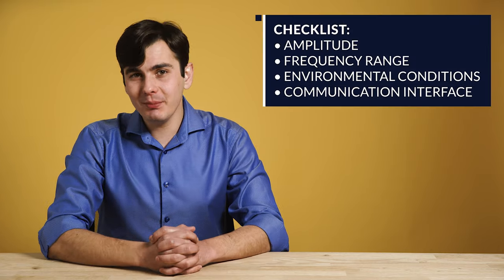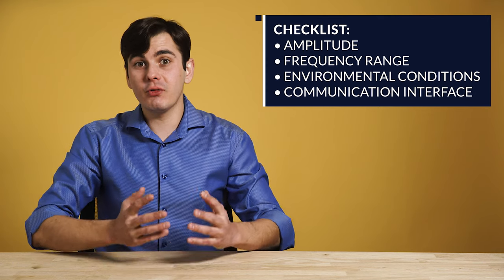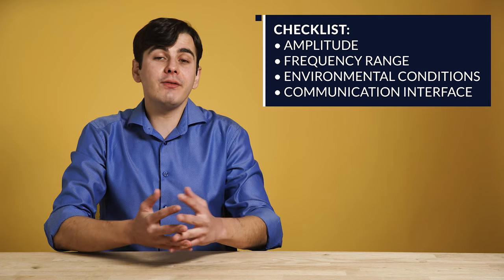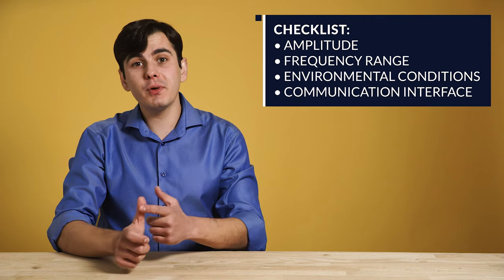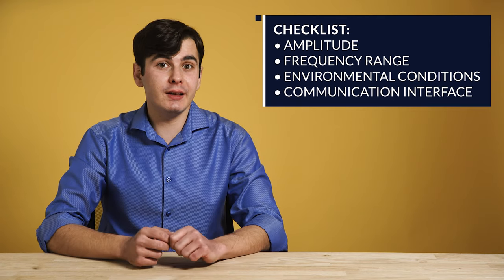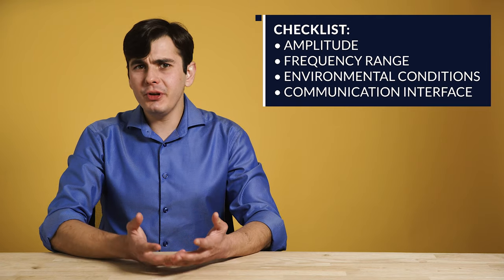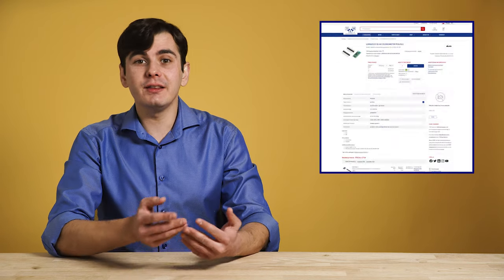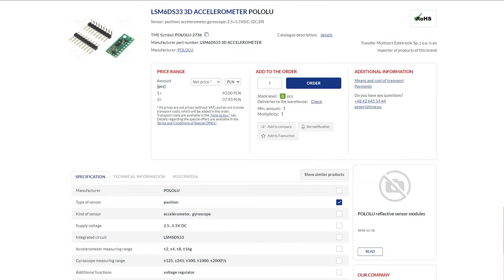Before going to TME and selecting your accelerometer, and like in this video, here are a few guidelines that will help you through the process. You should ask yourself, what is the amplitude of the vibrations? What is the range of the frequencies? What are the environmental conditions? Check for temperature, humidity and electromagnetic interferences. What is the communication interface? You should also check other kits that include additional sensors, like magnetometers and gyroscopes, that might come handy in your project.